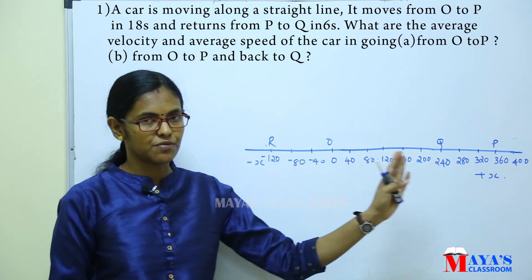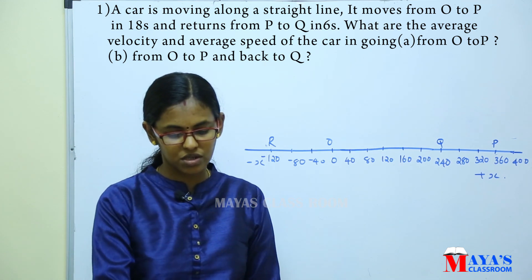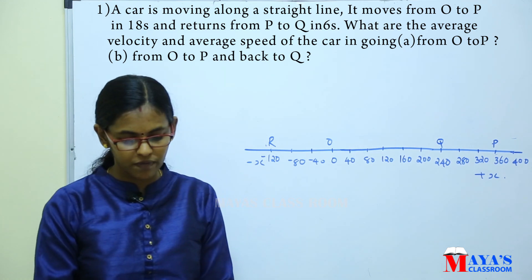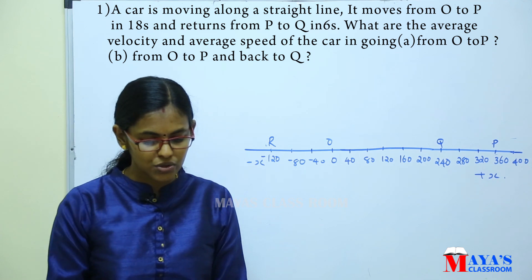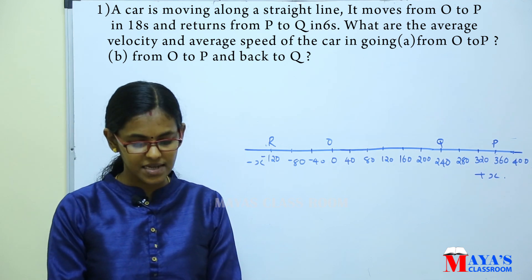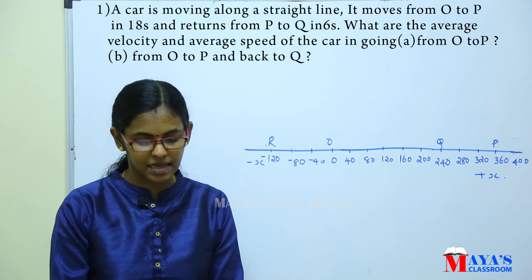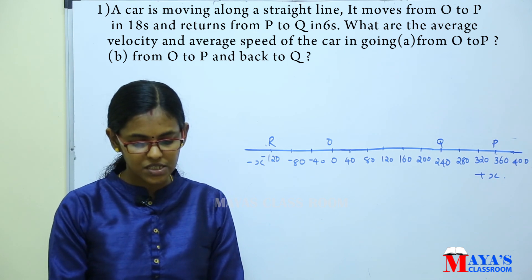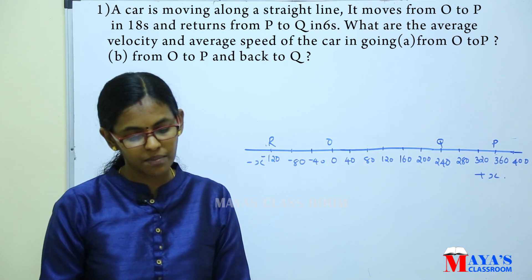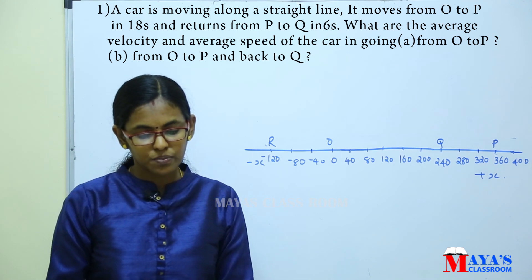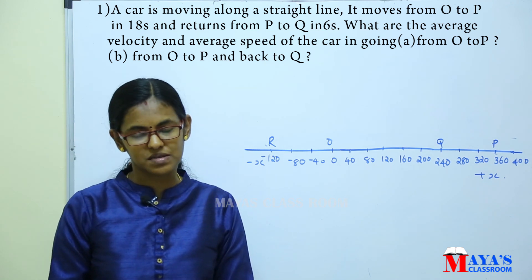The question is: a car is moving along a straight line. It moves from O to P in 18 seconds and returns from P to Q in 6 seconds. What are the average velocity and average speed of the car in going from O to P, and from O to P and back to Q?